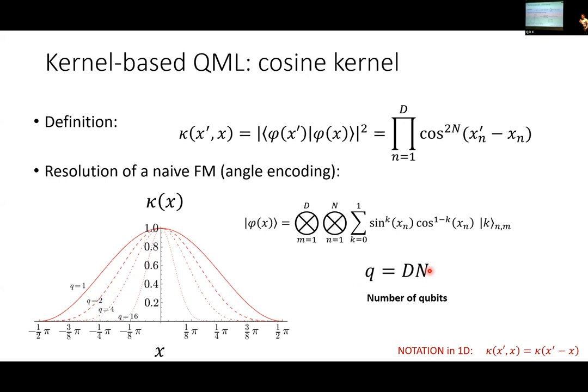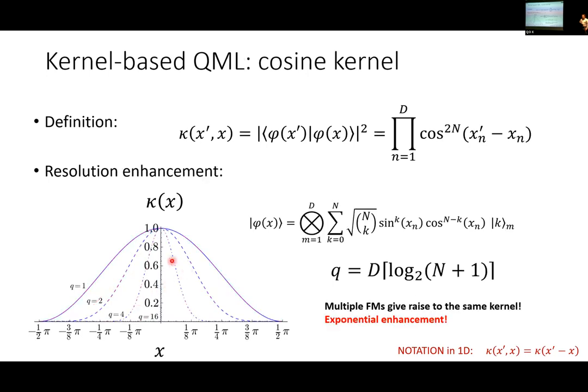The number of qubits you need is related to the dimension D. We are in two-dimensional space for educational purposes, and n is the power in this cosine kernel. If you have one qubit, the kernel is quite broad; if it's getting narrower, you need more qubits.